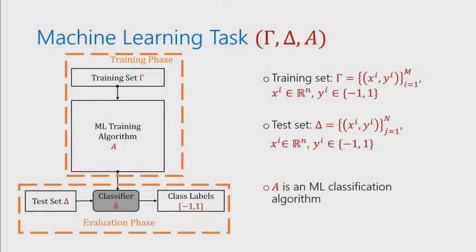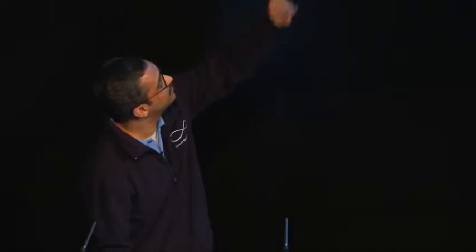Before I go on to explain our technique, let me introduce some brief notation. We're going to look at machine learning tasks, which are these triples where gamma is a training set, delta is a test set, and A is a ML classification algorithm. The training set consists of pairs of vectors from R^n and labels from the set {-1, +1}. Generally, developing a machine learning task consists of two phases: the training phase, where the training set gamma is given to the learner whose output is a classifier H, and this classifier is evaluated in the evaluation phase over the test set. The performance of the classifier is estimated based on how well it does over the test set.